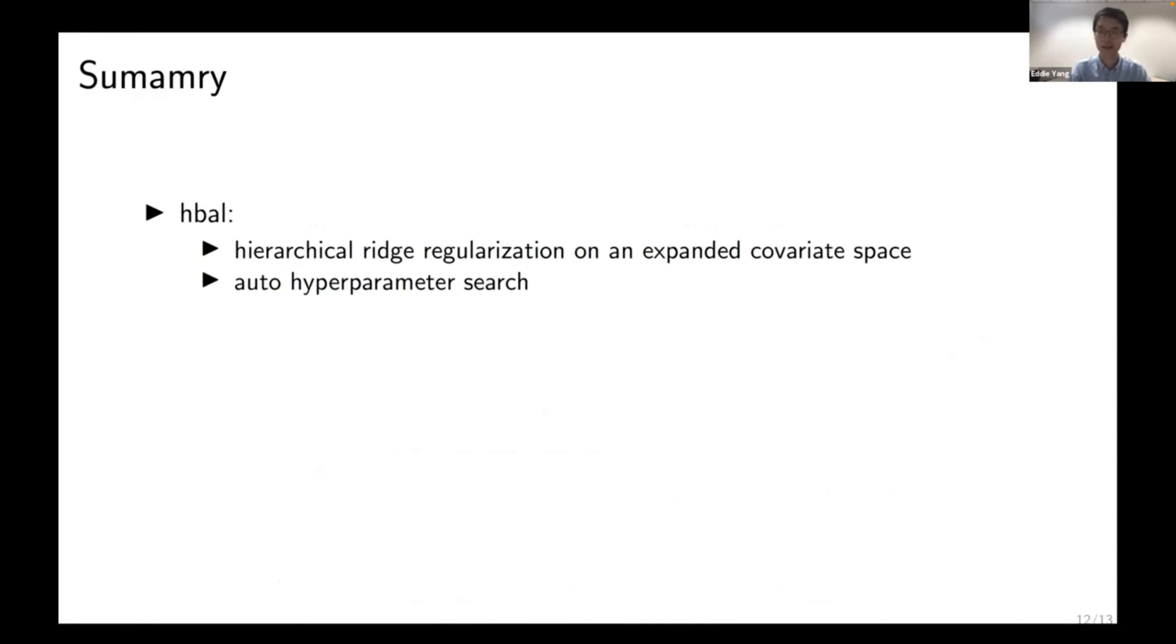So this is still a work in progress. In the future, we plan to bound the bias that arises from regularization. We want to also couple HBAL with an estimator to make it doubly robust. And lastly, we want to introduce ridge regularization on both the group and the individual parameter level to allow more fine-grained regularization. I think that's all. Happy to answer questions, and looking forward to the discussion.